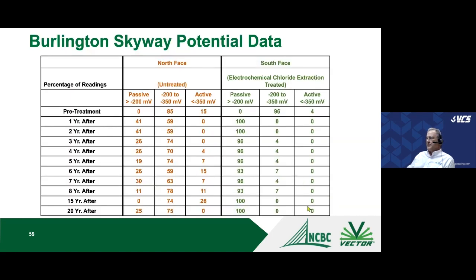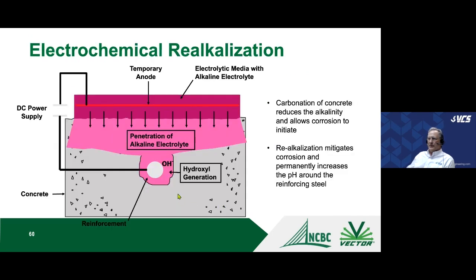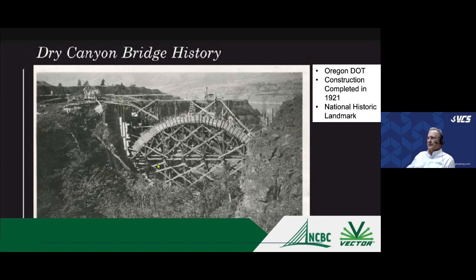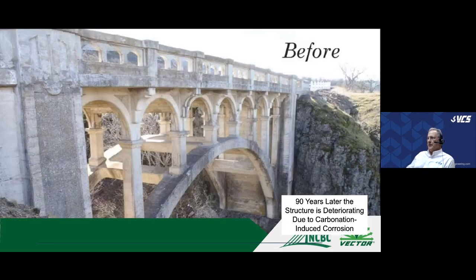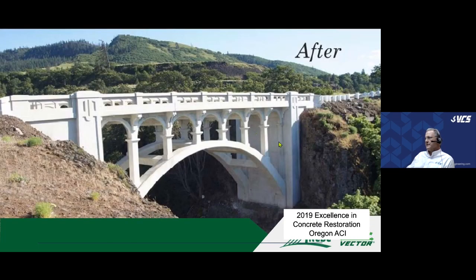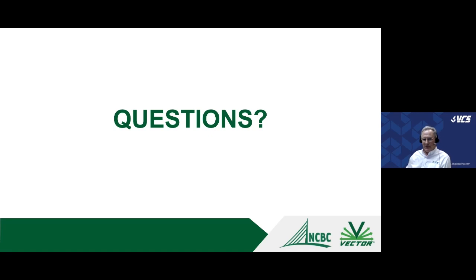The chloride profile before, during, and after treatment shows that chlorides at the reinforcing depth were reduced below the chloride threshold, and the steel re-alkalized and became passive again. Potentials 20 years later show no active corrosion. Re-alkalization works similarly but uses an alkaline electrolyte pushed through soaker hoses into the concrete to address carbonation rather than chlorides. The Tri Canyon Bridge — a 1921 landmark — was re-alkalized after carbonation-induced corrosion damage, and received an Excellence in Restoration award from the Oregon ACI chapter.